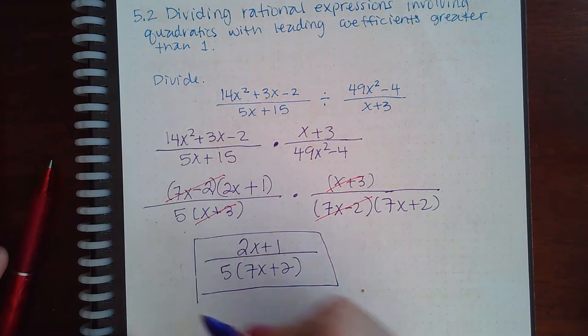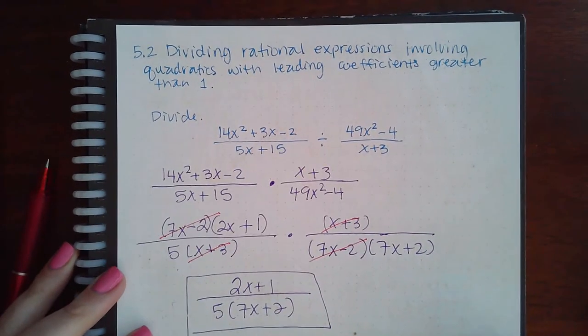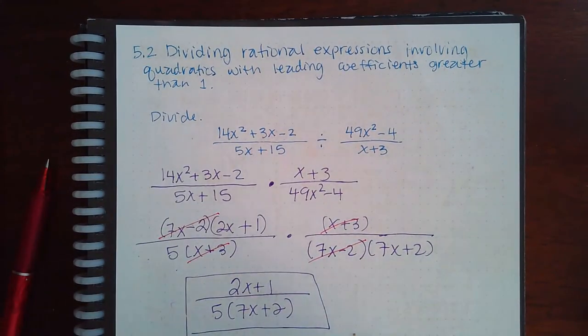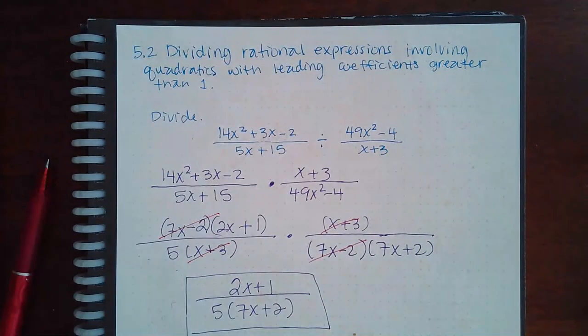It really depends on the problem. Not all the problems are going to be exactly the same because they're going to have different things. You could end up with trinomials on all four of those spots, both numerators and both denominators. It really just depends on what problem you're given.